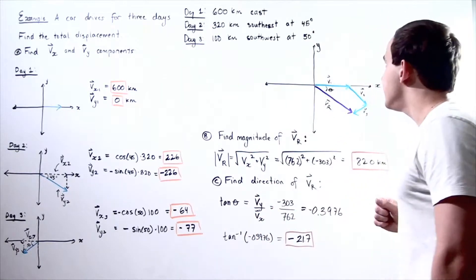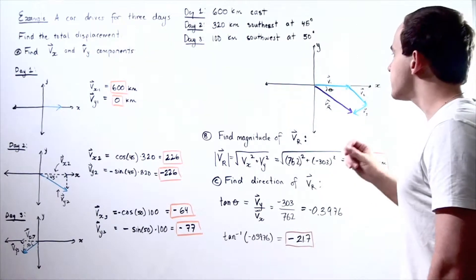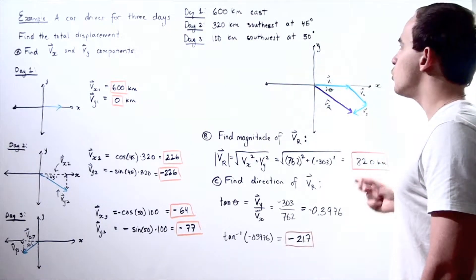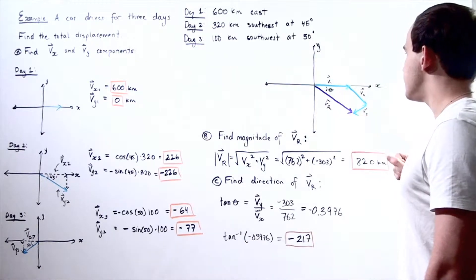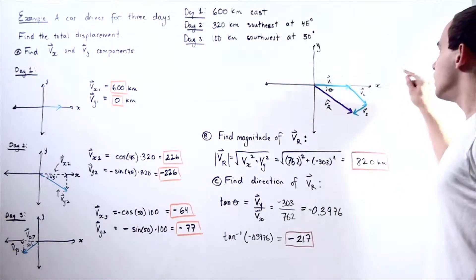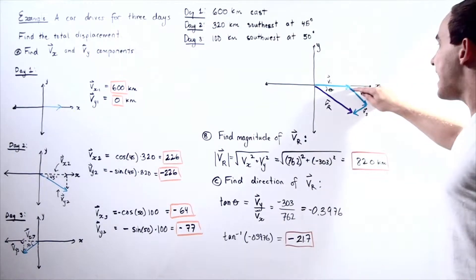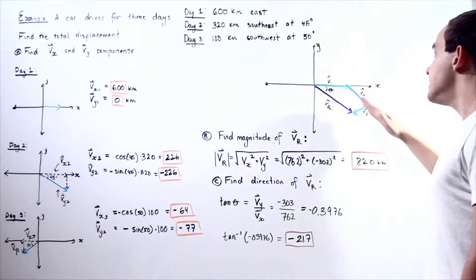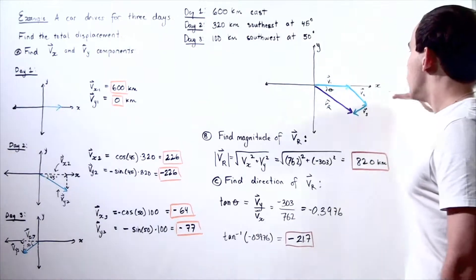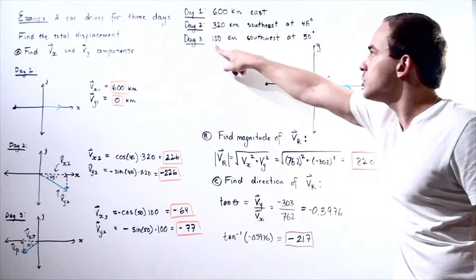Let's begin by drawing our diagram. Here we have our reference frame, the xy-plane. Vector one is v1, vector two is v2, and vector three is v3. During day one, we drive 600 kilometers east to the right along our x-axis. Then we make a 45-degree turn and drive 320 kilometers. Finally, we make a 50-degree turn with respect to our x-axis and drive 100 more kilometers.